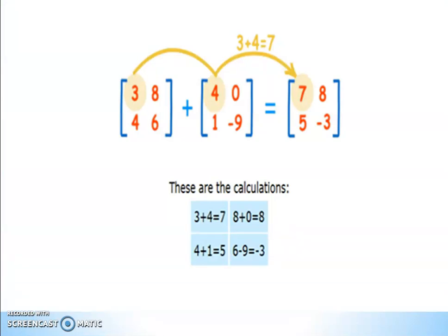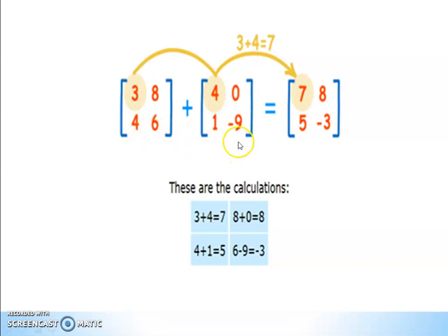To use the identity matrix, first we have to practice addition of matrices. For example, [3, 8; 4, 6] plus [4, 0; 1, -9]. We add corresponding elements: a11 + b11, a12 + b12, a21 + b21, a22 + b22. That gives us 3+4=7, 8+0=8, 4+1=5, and 6+(-9)=-3.